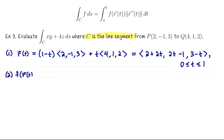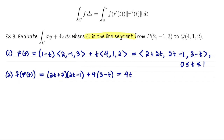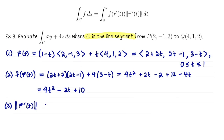Our next step is to evaluate f of r of t, so we need x times y plus 4 times z. The first two components multiplied together are (2 + 2t)(2t − 1), written as (2t + 2)(2t − 1), plus 4 times the third component. Expanding: 4t² − 2t + 4t + 2t − 2 + 12 − 4t, which simplifies to 4t² − 2t + 10. For the speed, that's the length of the vector (2, 2, −1): the square root of 4 + 4 + 1, which is the square root of 9, equal to 3.